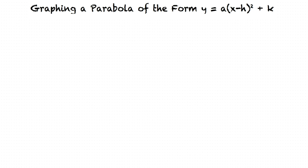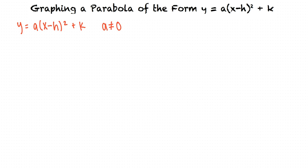This video will cover the topic of graphing a parabola of the form y equals a times the quantity x minus h squared plus k. We'll be given a parabolic equation in this form, where a is not equal to zero, and asked to graph the parabola by plotting the vertex and two additional points on each side of the vertex.